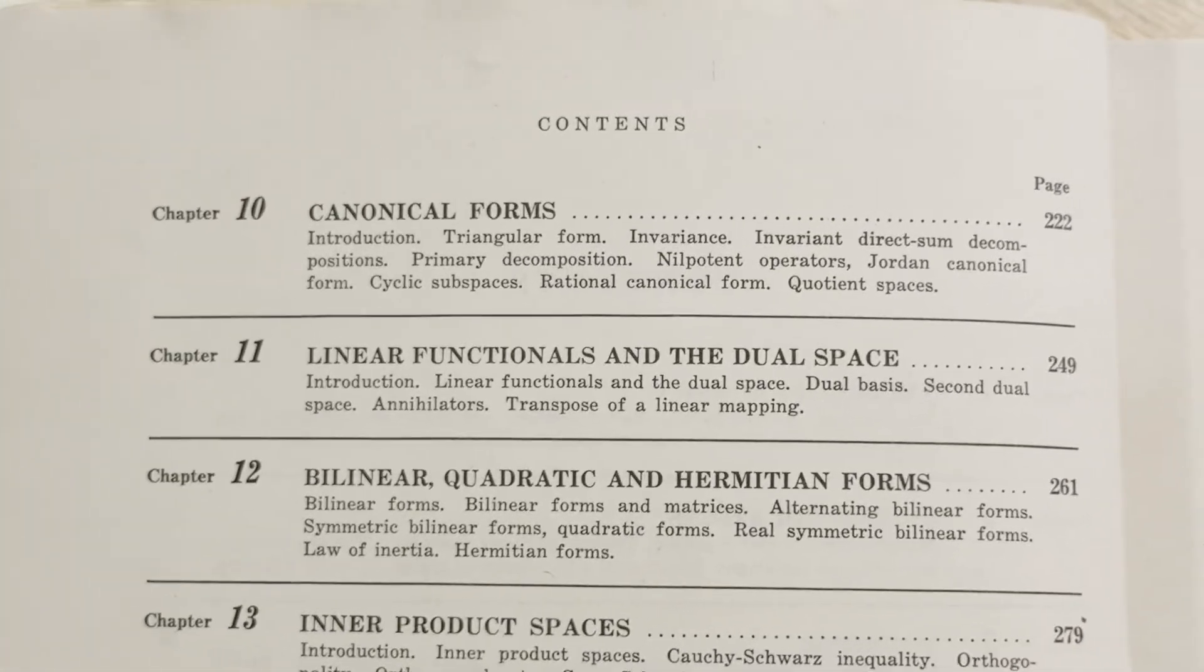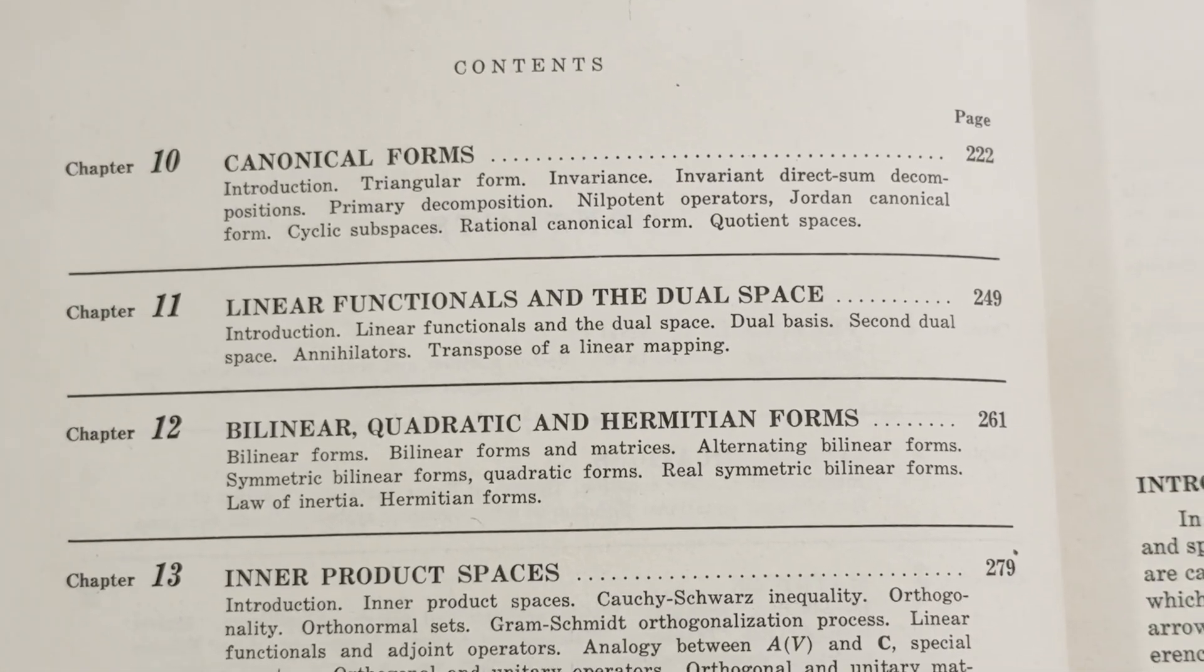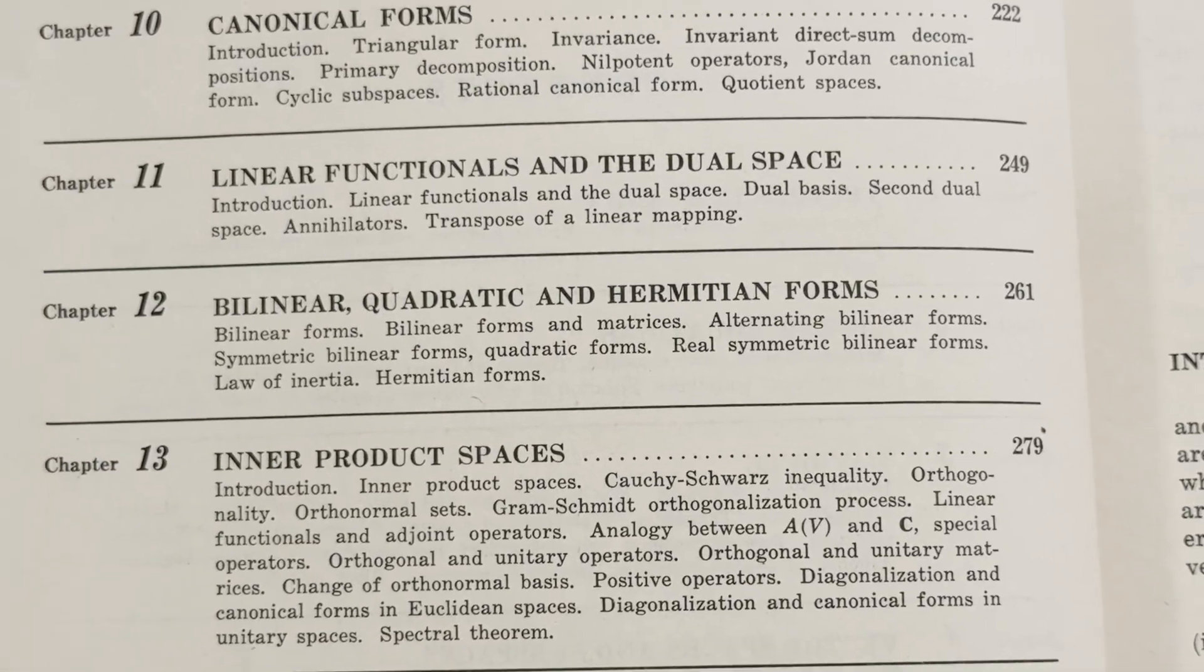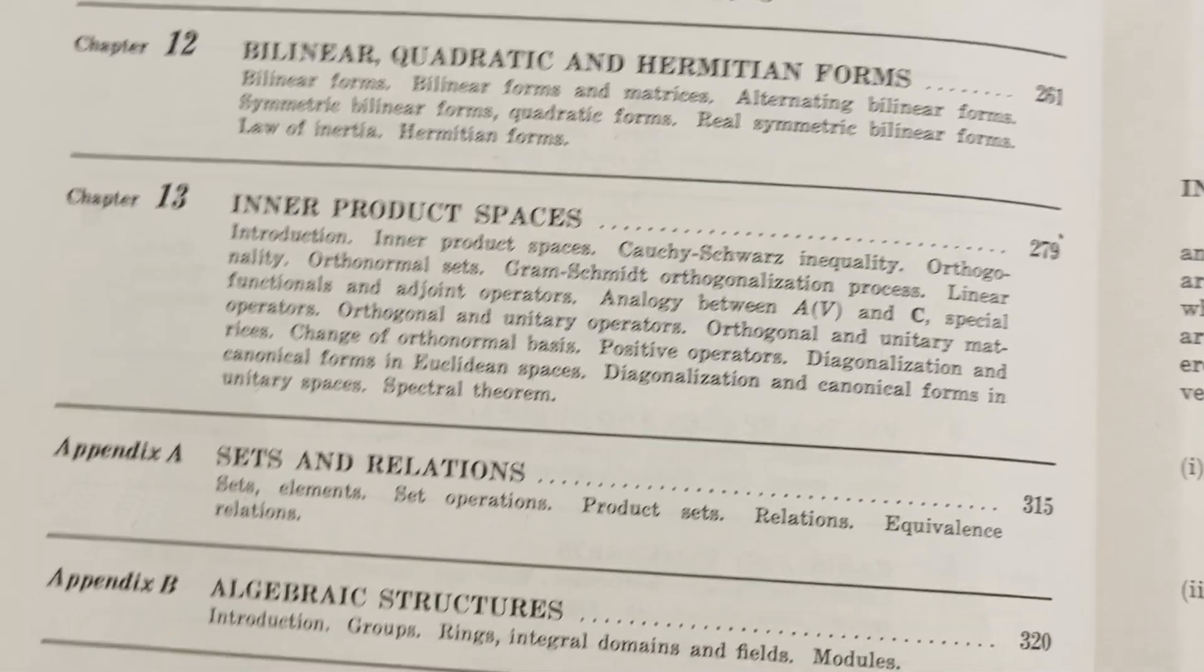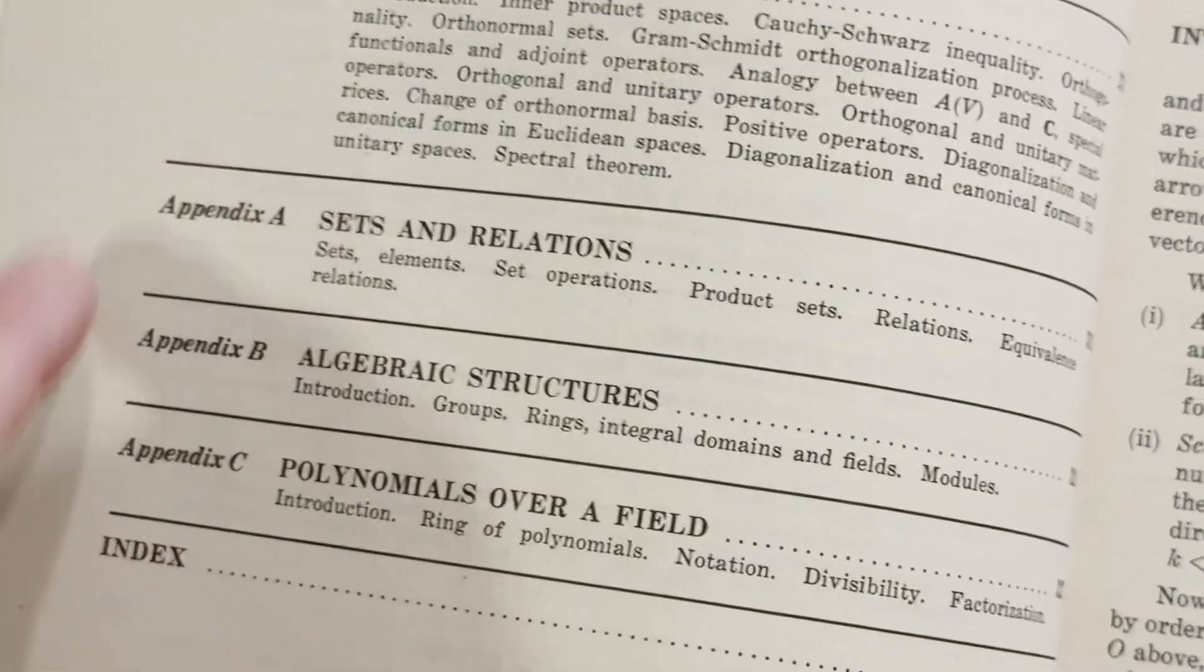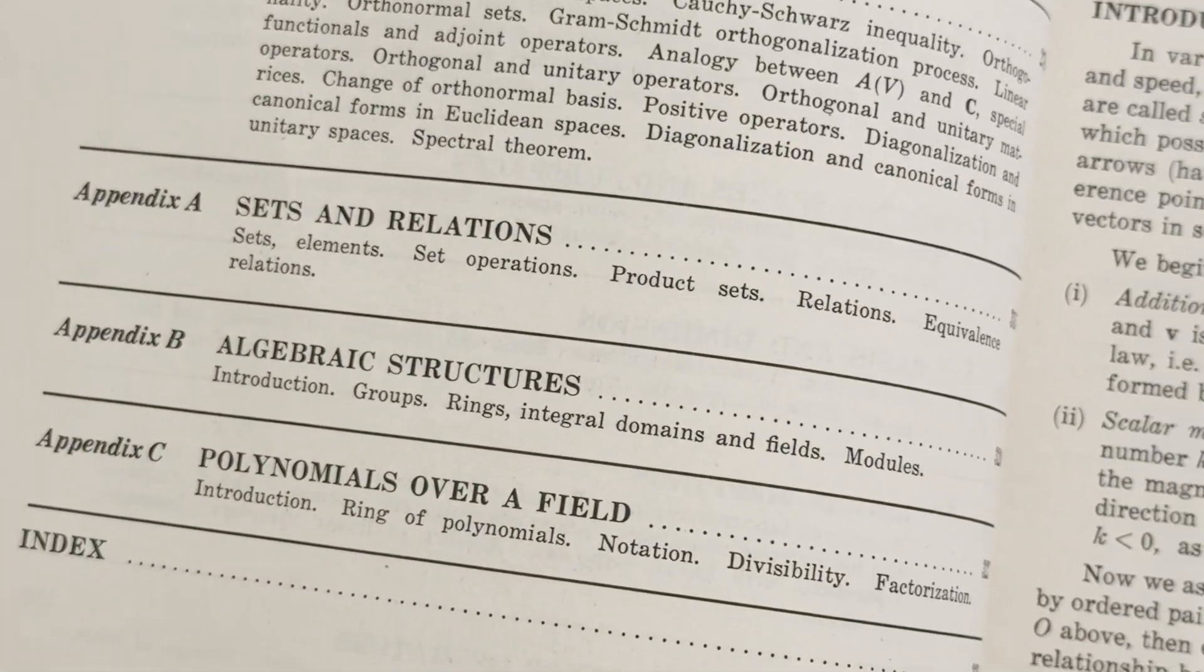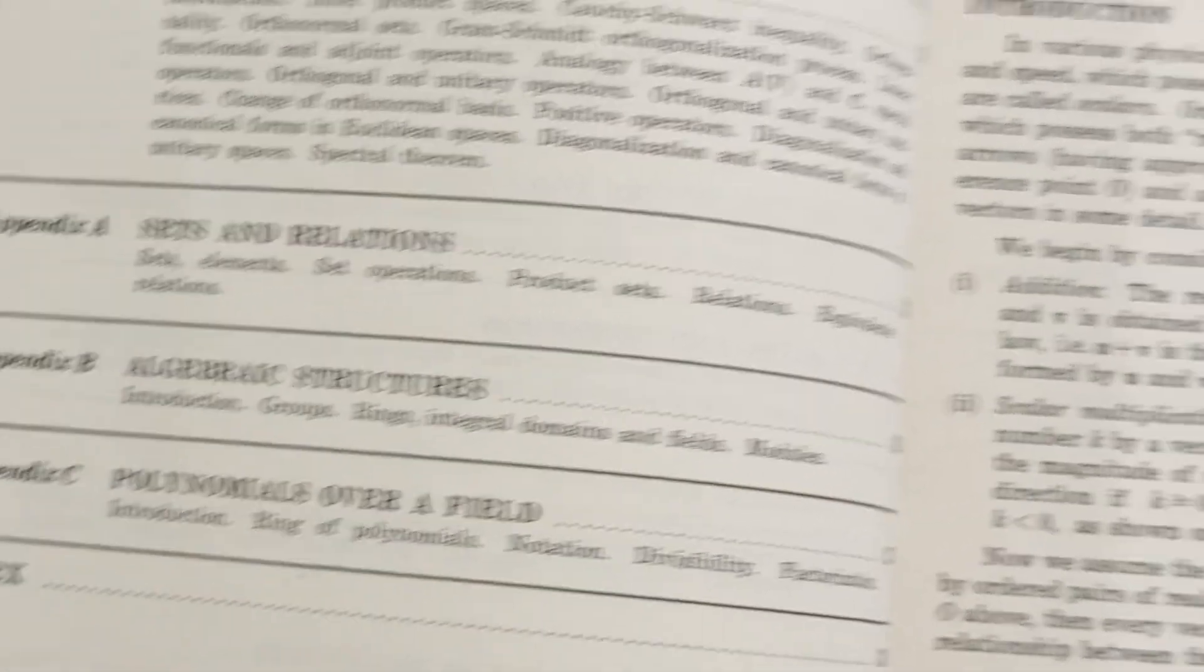Turn the page here very carefully not to tear the page. Canonical forms, linear functionals and the dual space, bilinear, quadratic and Hermitian forms, inner product spaces, and a couple appendices here, sets and relations, algebraic structures, and polynomials over a field.